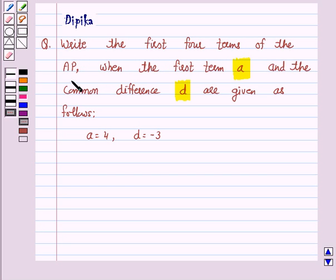Write the first four terms of the AP when the first term A and the common difference D are given as follows. A is equal to 4 and D is equal to minus 3. So let's start the solution.